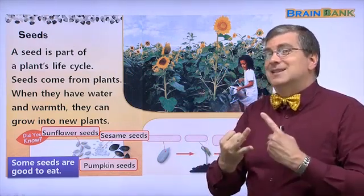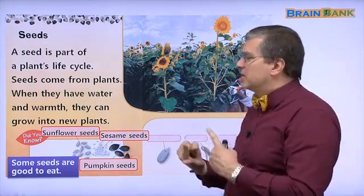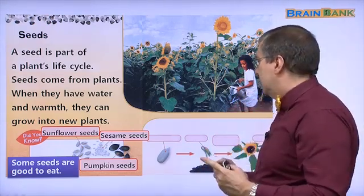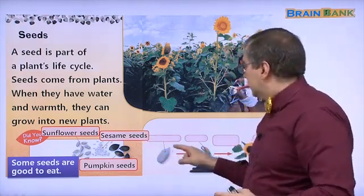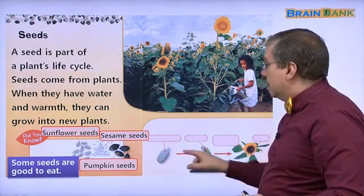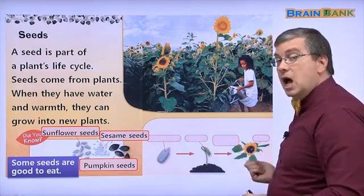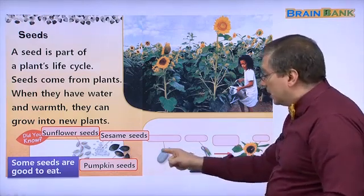The sun will shine and warm the plants, and the plants take the sunlight and they can grow bigger. They need water and they need warmth. Those are two of the things that plants need. They need other things, but those are the two main things.